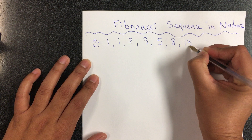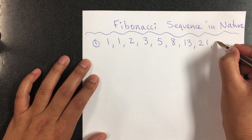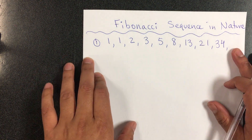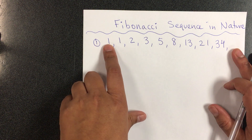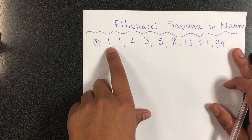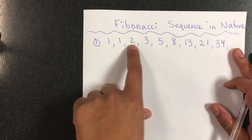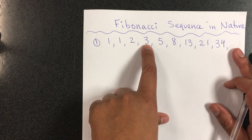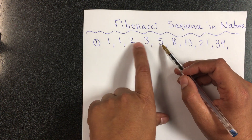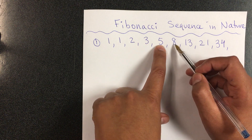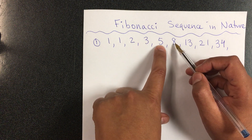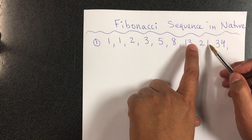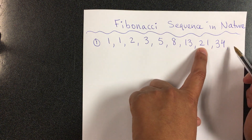...8, 13, 21, 34, and so on — it continues. Now, how do you get this sequence? If you noticed, and if you watched the video already, it's 1 plus 1 you get 2; 1 plus 2 gives you 3; to get this one you need to add 2 plus 3 to get 5; then 3 plus 5 gives 8; 5 plus 8 is 13; 8 plus 13 is 21; 13 plus 21 is 34, and so on.